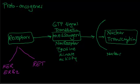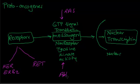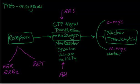When you go inside the cell, the messenger system — GTP signaling — is formed by another kind of gene, which is the RAS gene. Non-receptor tyrosine kinase activity is formed by the ABL gene. For nuclear transcription, there are two proto-oncogenes: C-Myc and N-Myc oncogenes.